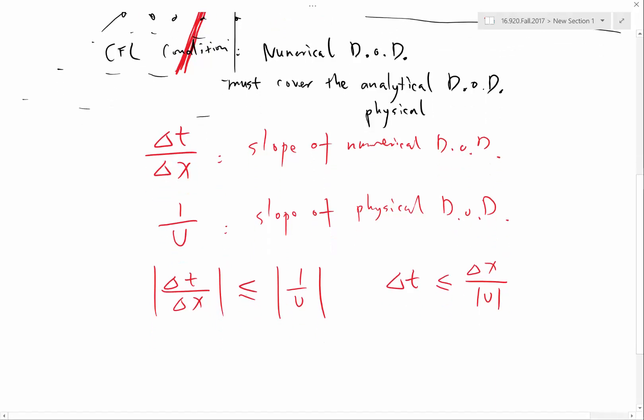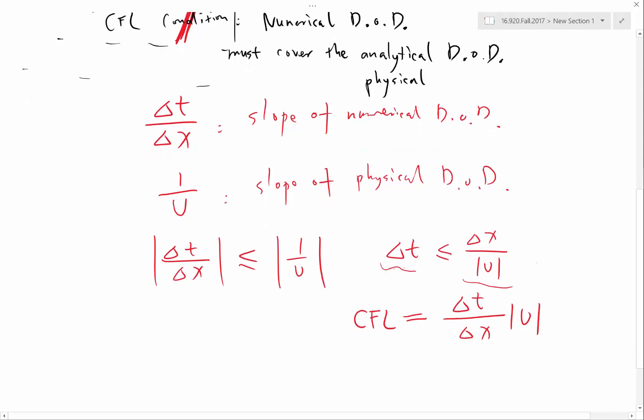Alright, so it also defines your CFL condition, CFL number, sorry, usually it's just the code CFL. It's going to be the ratio of this number and this number. So Δt/Δx times the magnitude of U. Right, so it's basically how much you are satisfying. If the left-hand side and right-hand side are exactly equal, CFL number is going to be 1. If your Δt is half as large as what is the maximum value for its stability criterion, then CFL is going to be 0.5.